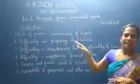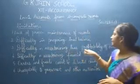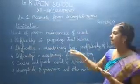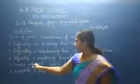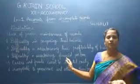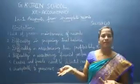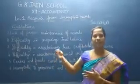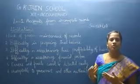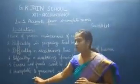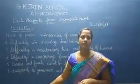To summarize the limitations: one, proper maintenance of records will be lacking. Two, difficulty in preparing trial balance. Three, difficulty in ascertaining the true profitability — whether there is net profit or net loss is very difficult to determine. Four, difficulty in ascertaining financial position — it will miss some information in assets and liabilities. Five, errors and frauds cannot be detected easily. Six, unacceptable to the government — if I want to pay tax, I will not know the information correctly, and it has not been accepted by the government. When I maintain complete records, it is acceptable.